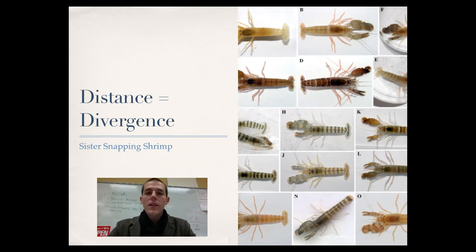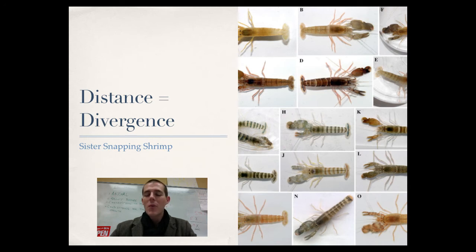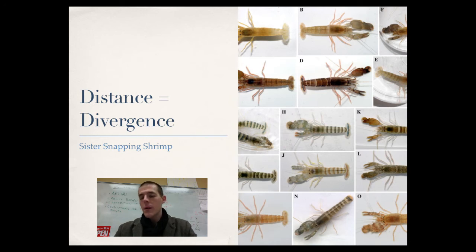With allopatric speciation, recognize that distance equals divergence. If you pick a species in an area and draw circles outward, the further you get from the original species, the less closely related those organisms will be — each population must adapt to its local environment and becomes different from the home species. A case study is the sister snapping shrimp of the Isthmus of Panama: as the isthmus formed over millions of years and separated the Atlantic and Pacific oceans, shrimp on either side became genetically distinct sister species — evidence that they were once the same species.